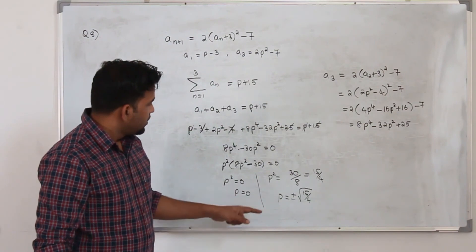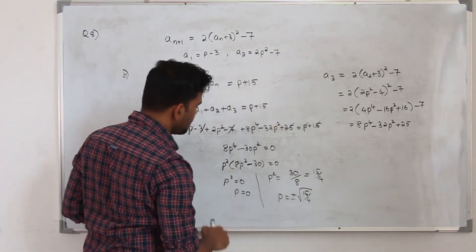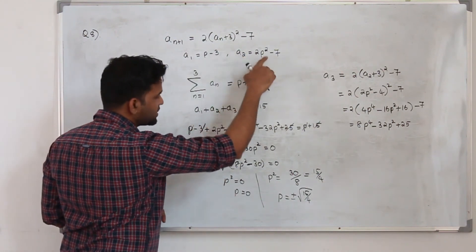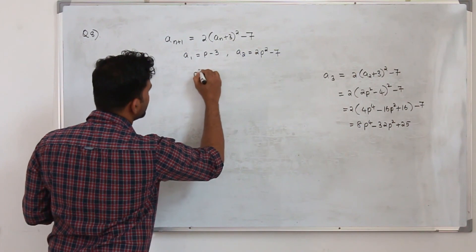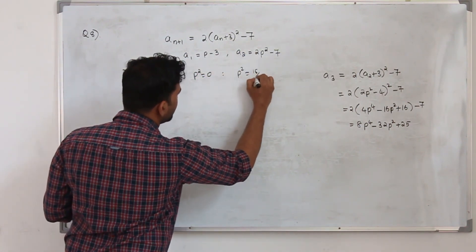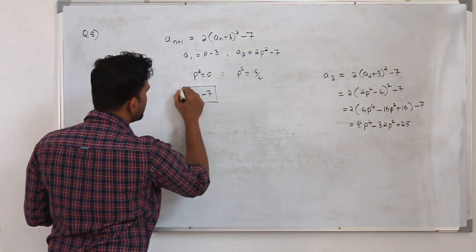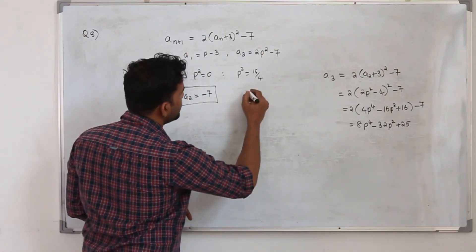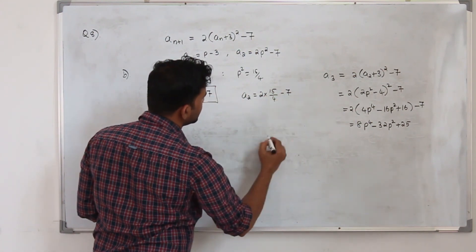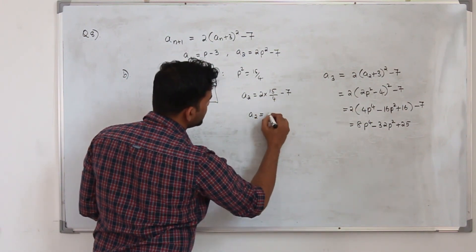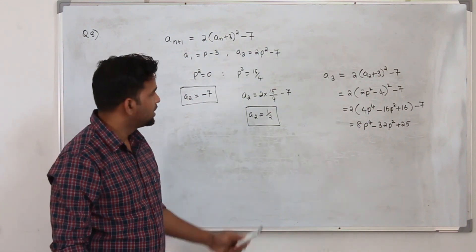When p² = 0: a₂ = 2(0) − 7 = −7. When p² = 15/4: a₂ = 2(15/4) − 7 = 15/2 − 7 = 1/2. Therefore the two possible values of a₂ are −7 and 1/2. That is our final solution.